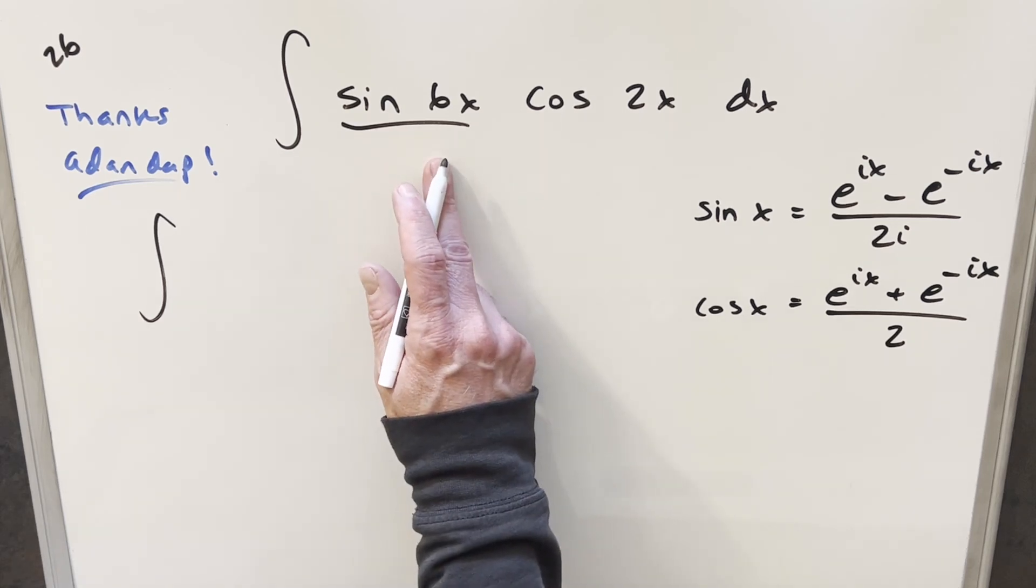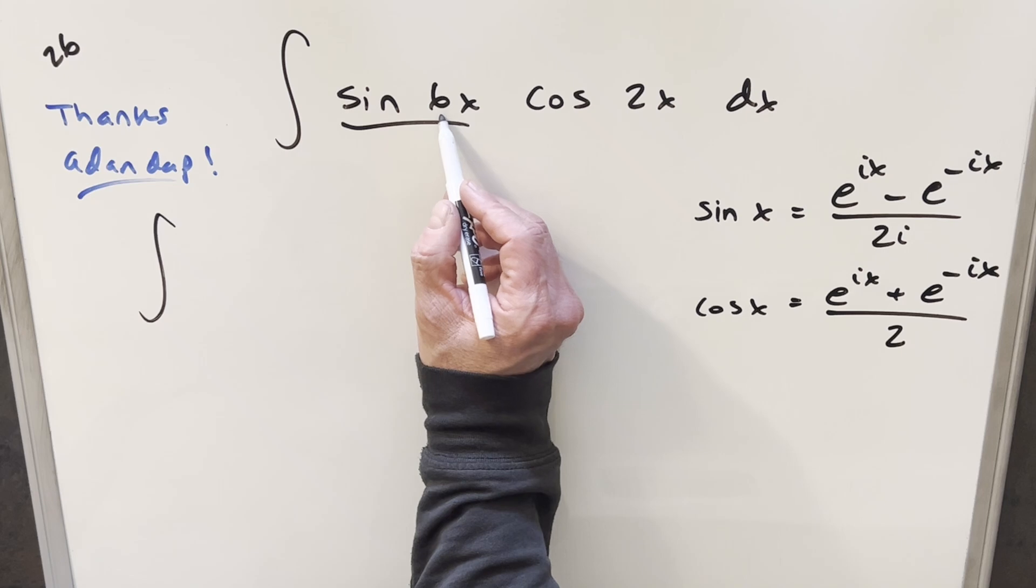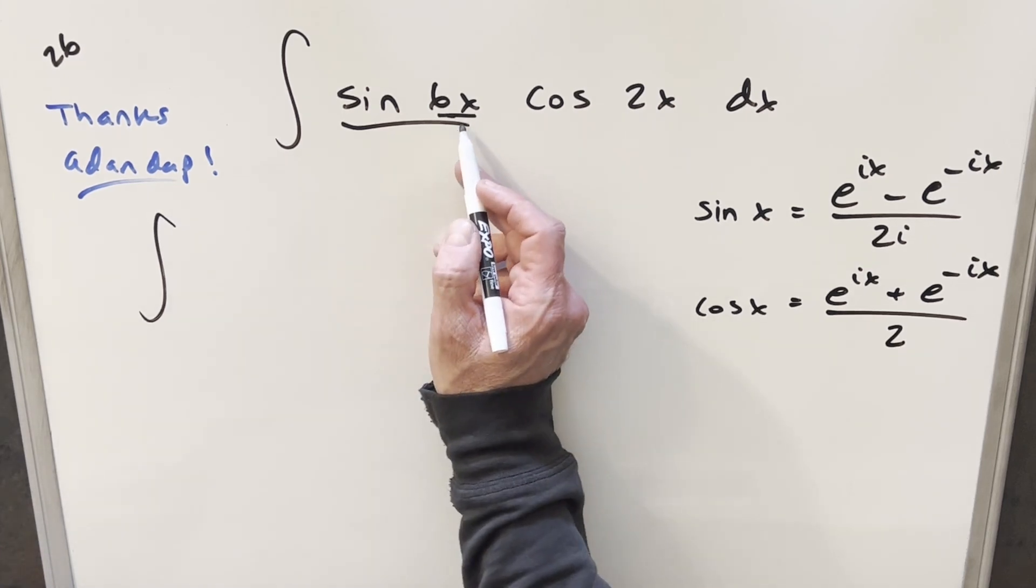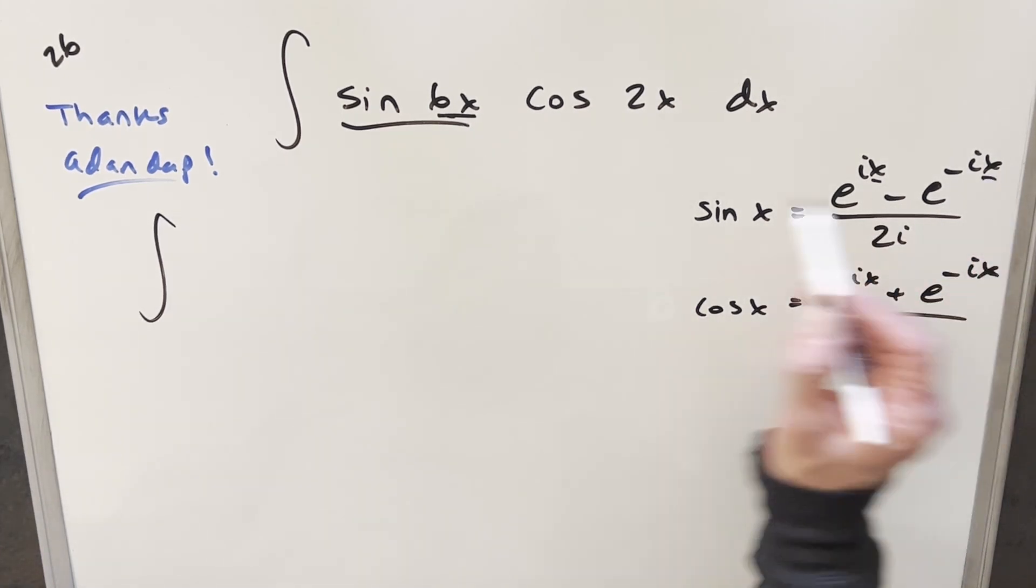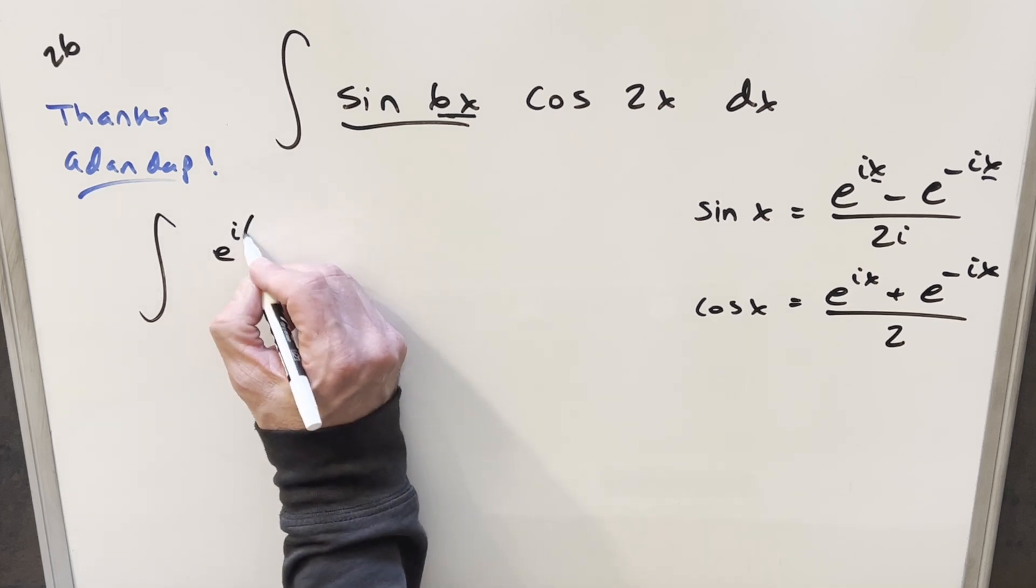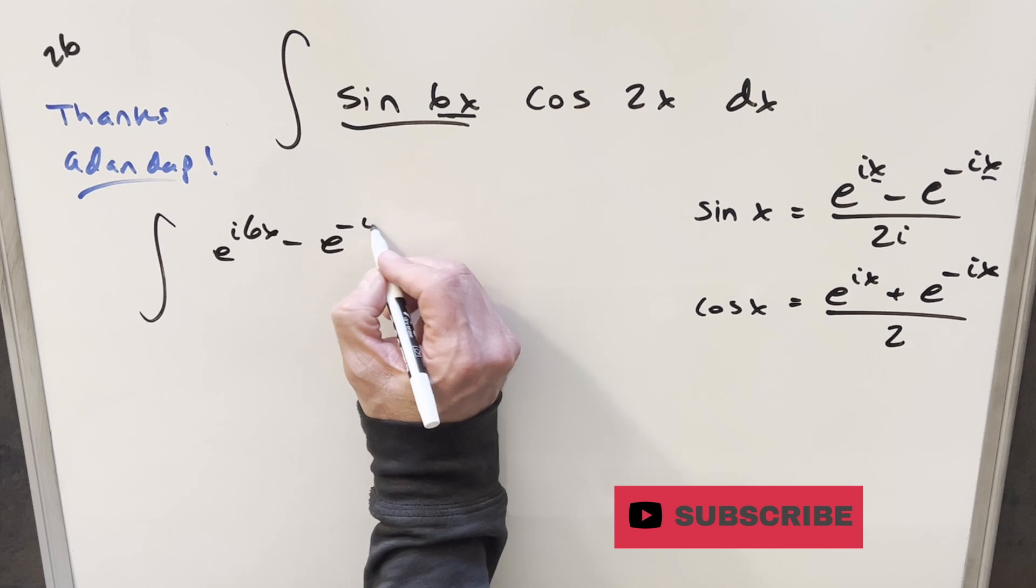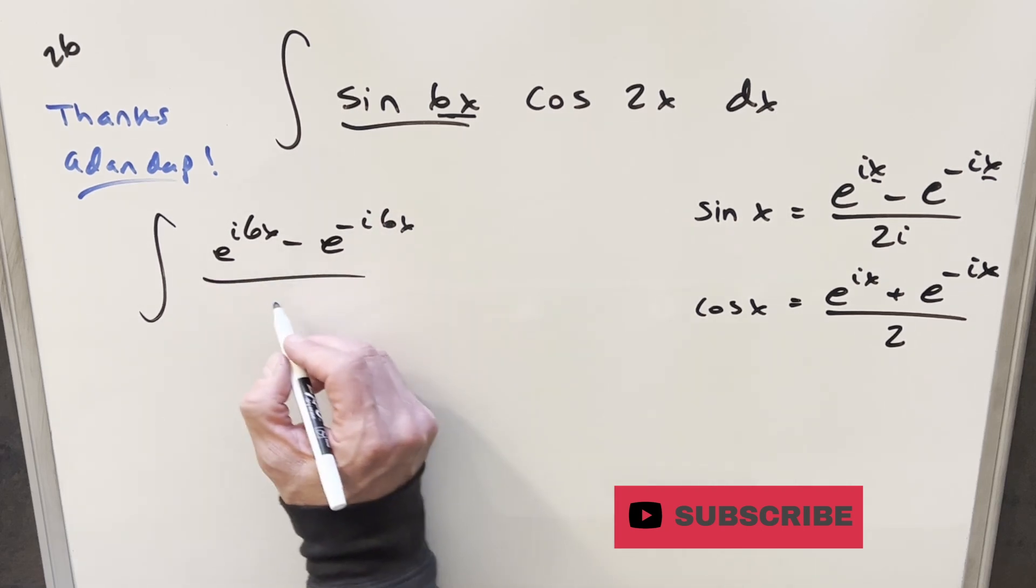So for sine 6x, we have this definition of sine x. So all I need to do is change the input. We'll plug in wherever we have an x, we'll just plug in 6x. So what's going to happen is we're going to have here, this is going to become e^(i6x) minus e^(-i6x), and this is all over 2i.